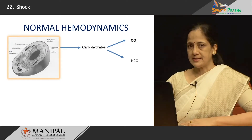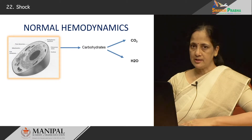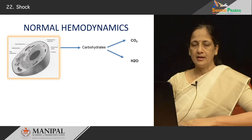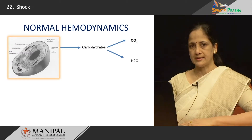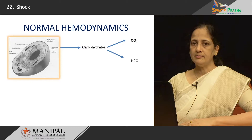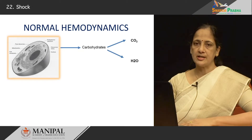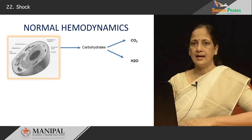Let us go back to the basics for a short while. We know that there is a lot of activity, metabolic and biochemical, occurring at the level of the cell. For all those activities, energy is generated by the metabolism of carbohydrates, especially glucose, which is broken down into carbon dioxide and water. This carbon dioxide and water, along with other metabolites formed within the cell, are drained into the venules and carried back through the venous circulation to the heart, lungs and so on.